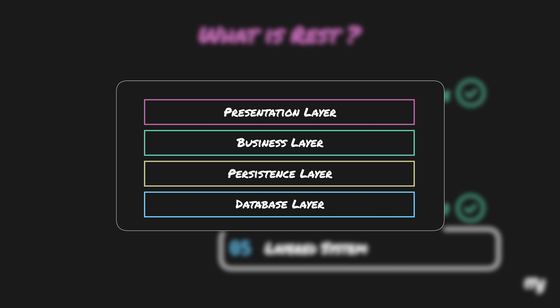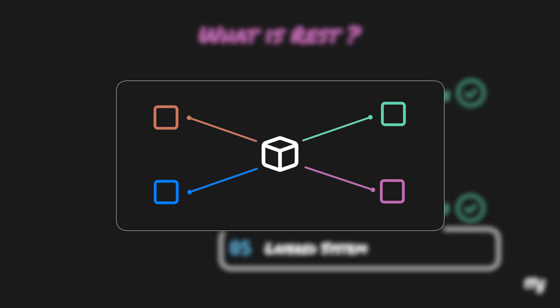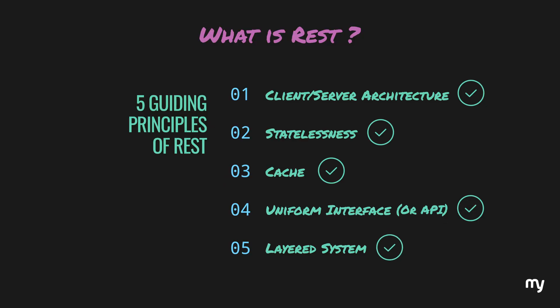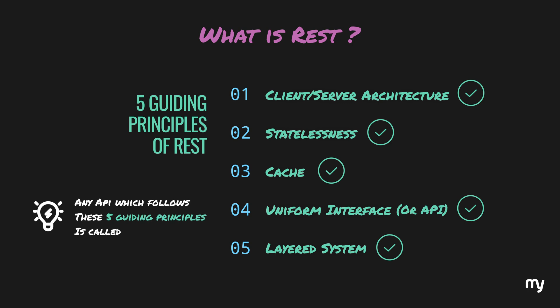For example, within an application, the persistence layer uses the services of the database layer and offers services to the business layer. Similarly, this concept can also be used in a microservices architecture, where each service has its own unique responsibility. So as we can see, HTTP is quite a good fit for the REST principles, and any API which follows these guiding principles is called a RESTful API. So there you have it — the fundamentals of HTTP and REST. Write down in the comments below if you have any questions. See you in the next video. Bis dann!